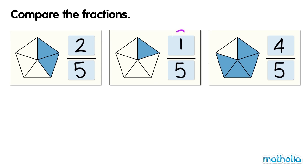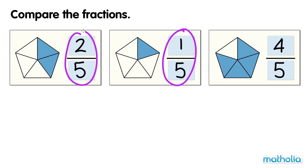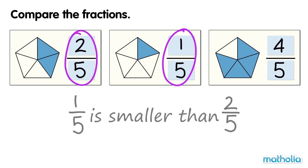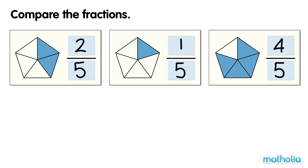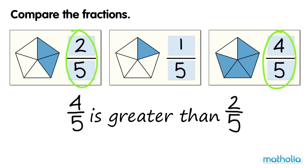One fifth has less shaded parts than two fifths. One fifth is smaller than two fifths. Four fifths has more shaded parts than two fifths. Four fifths is greater than two fifths.